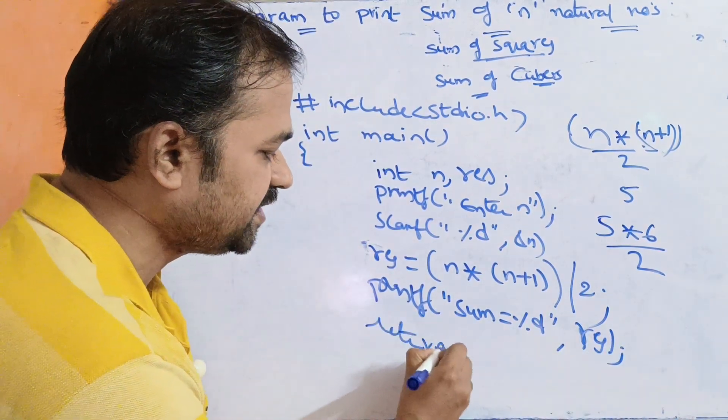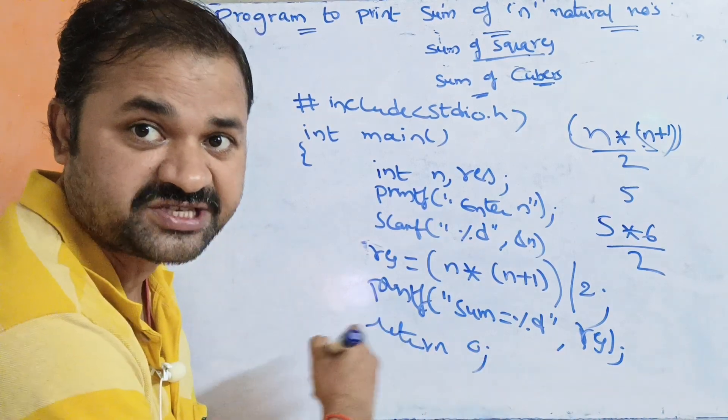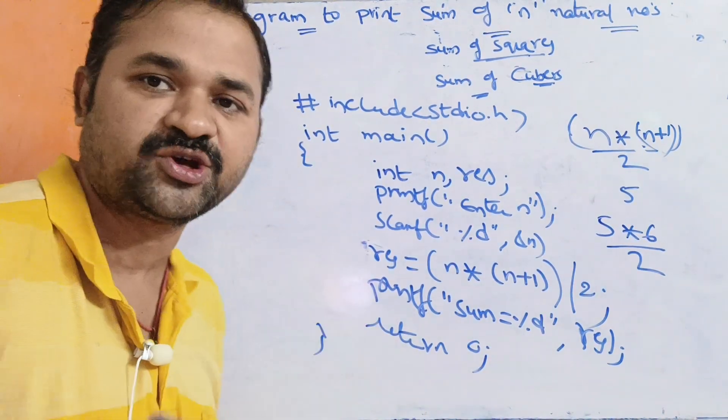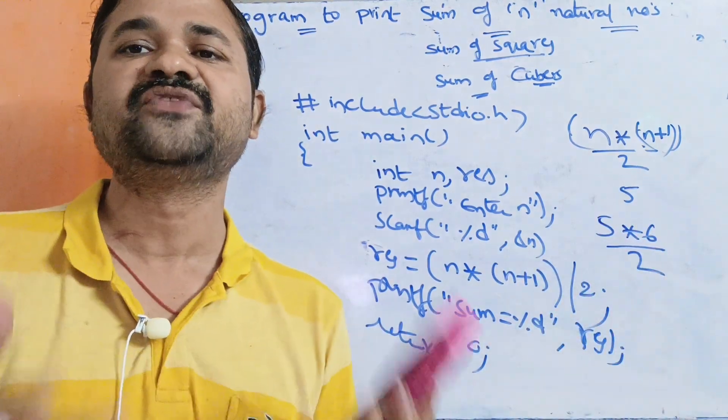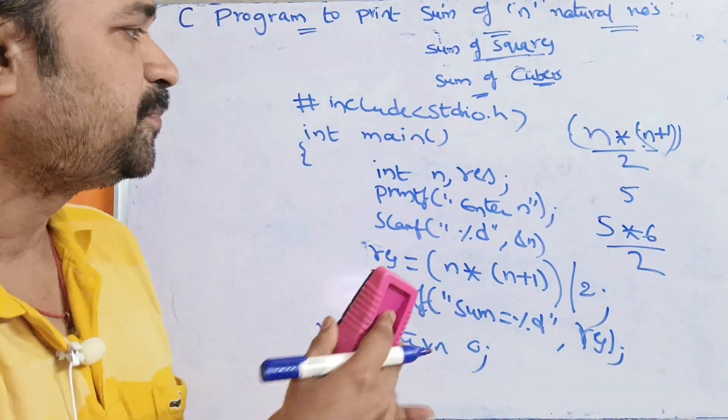Since the return type is int, the main function's last statement should be return 0. The output sum is equal to 15. Now, second one is sum of squares of n natural numbers.